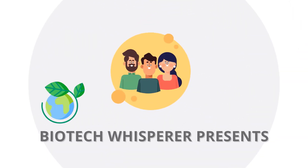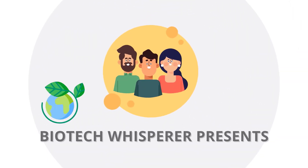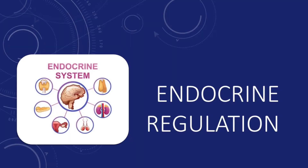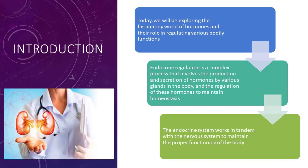Good morning YouTube, welcome to our video on endocrine regulation. Today we will be exploring the fascinating world of hormones and their role in regulating various bodily functions. Endocrine regulation is a complex process that involves the production and secretion of hormones by various glands in the body and the regulation of these hormones to maintain homeostasis. The endocrine system works in tandem with the nervous system to maintain the proper functioning of the body.